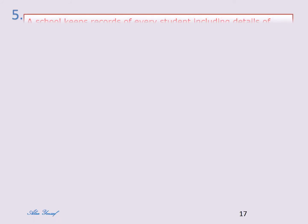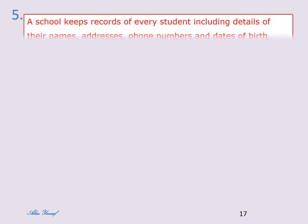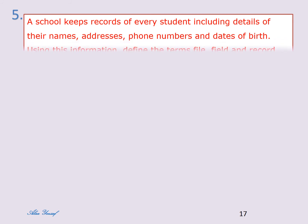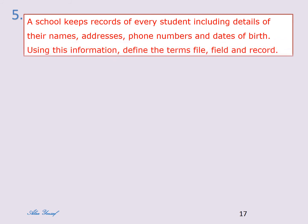Question number five: a school keeps records of every student including details of their names, addresses, phone numbers, and dates of birth. Using this information, define the terms file, field, and record.